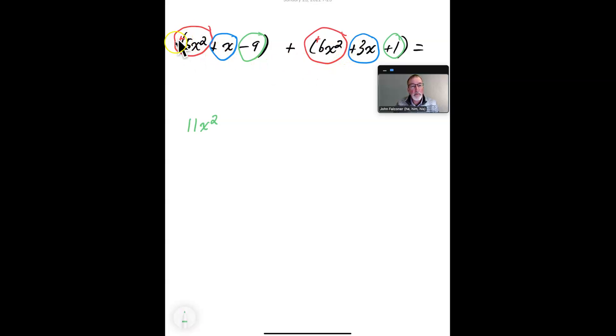Okay. So, the first one, positive 5x squared plus positive 6x squared gave us 11x squared. And the next term is the x term. We have positive x and positive 3x. So, 3x plus x will give us positive 4x.